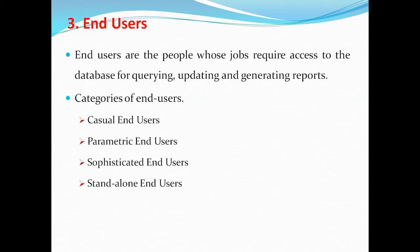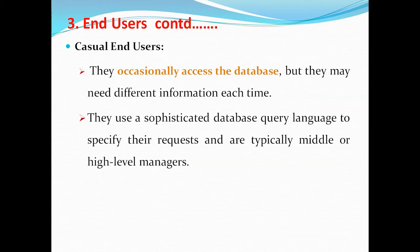After database design, someone monitors the data, and those who actually use that data are called end users. We categorize end users into four categories: first, casual end user; second, parametric end user; third, sophisticated end user; fourth, standalone end user. Casual end users access the database occasionally, but each time they access it, they need different information. For example, consider a lecturer accessing a student database — one time to retrieve a student's name or roll number, another time to retrieve marks in different subjects.